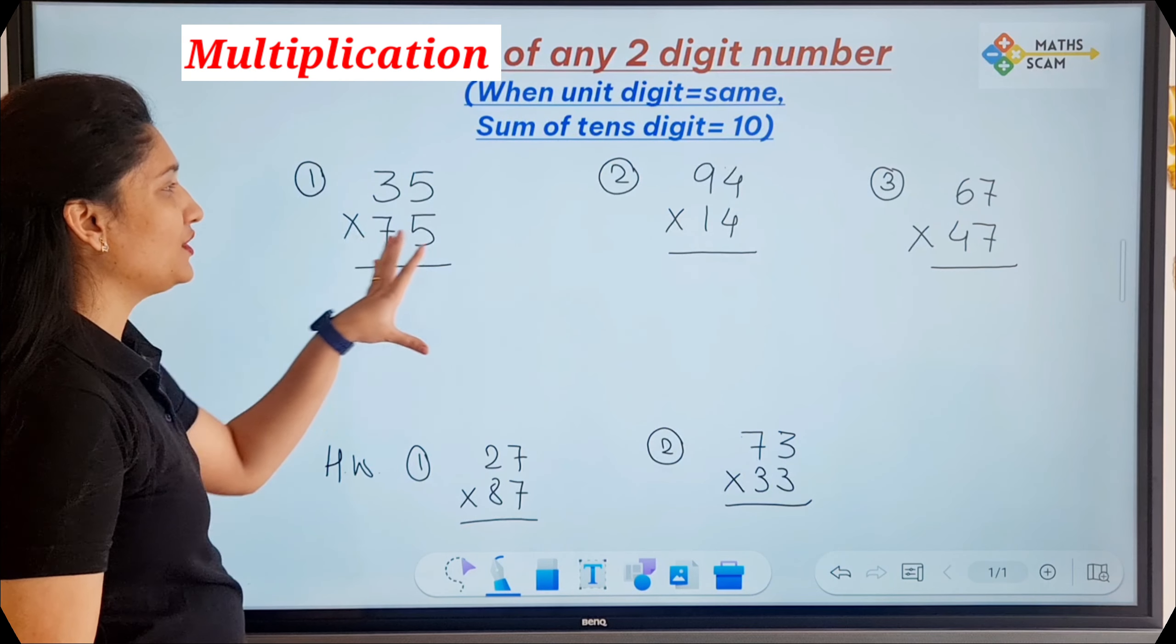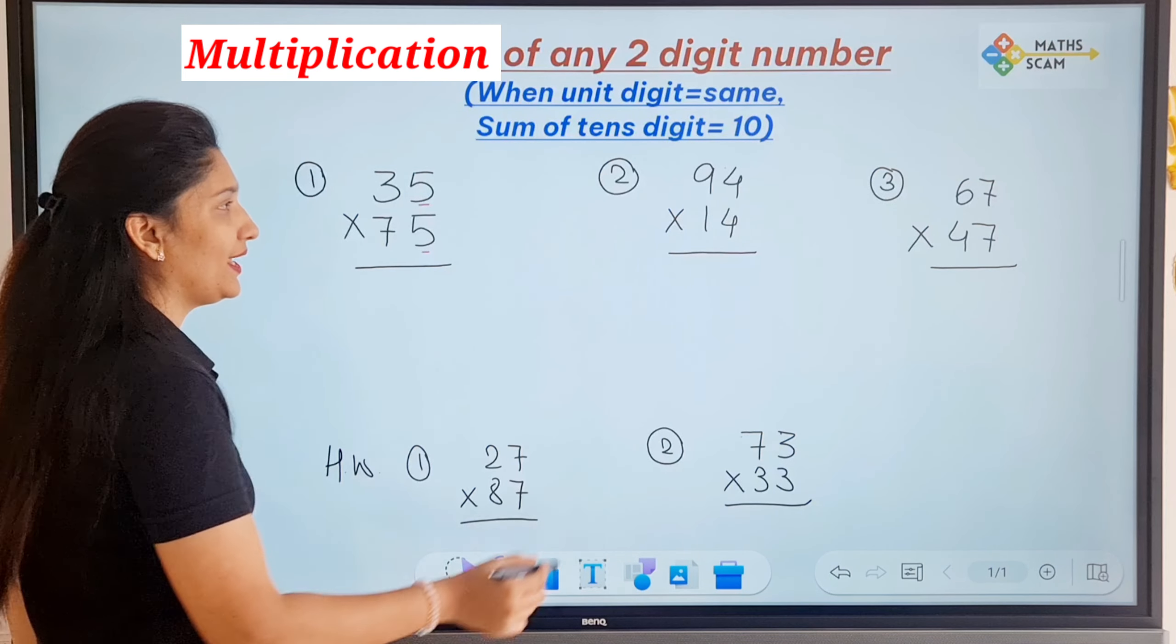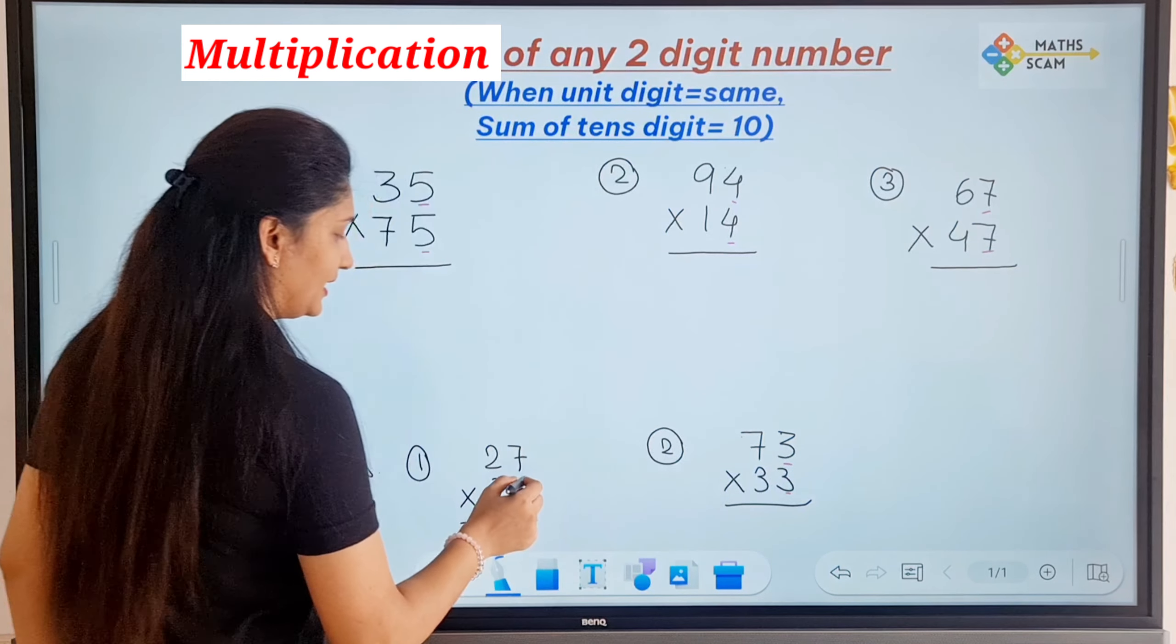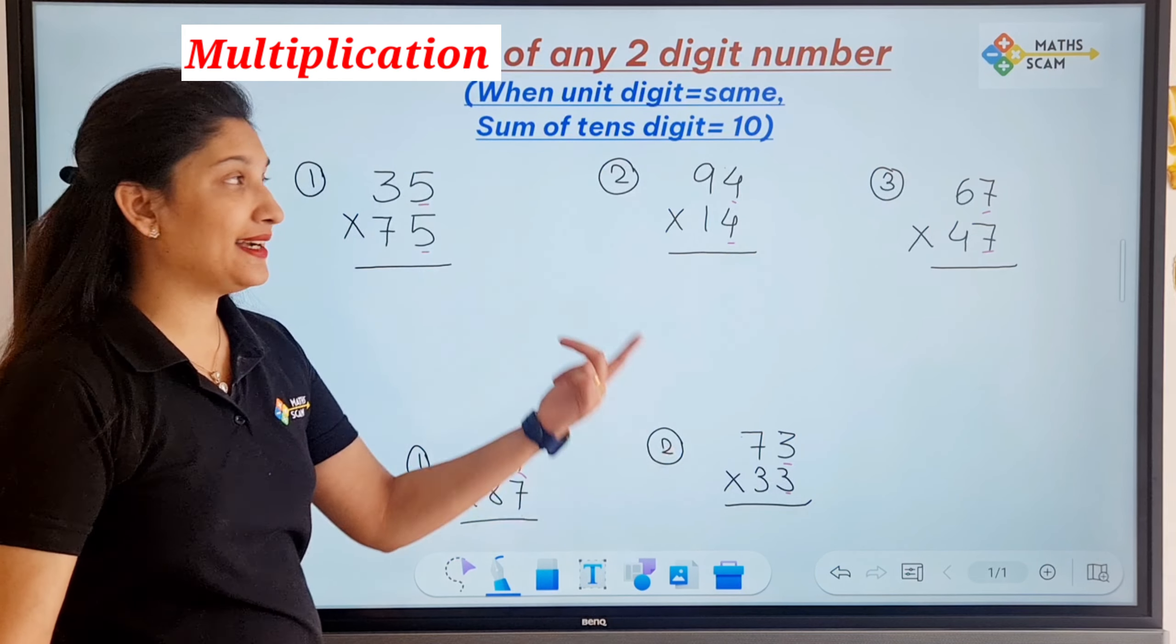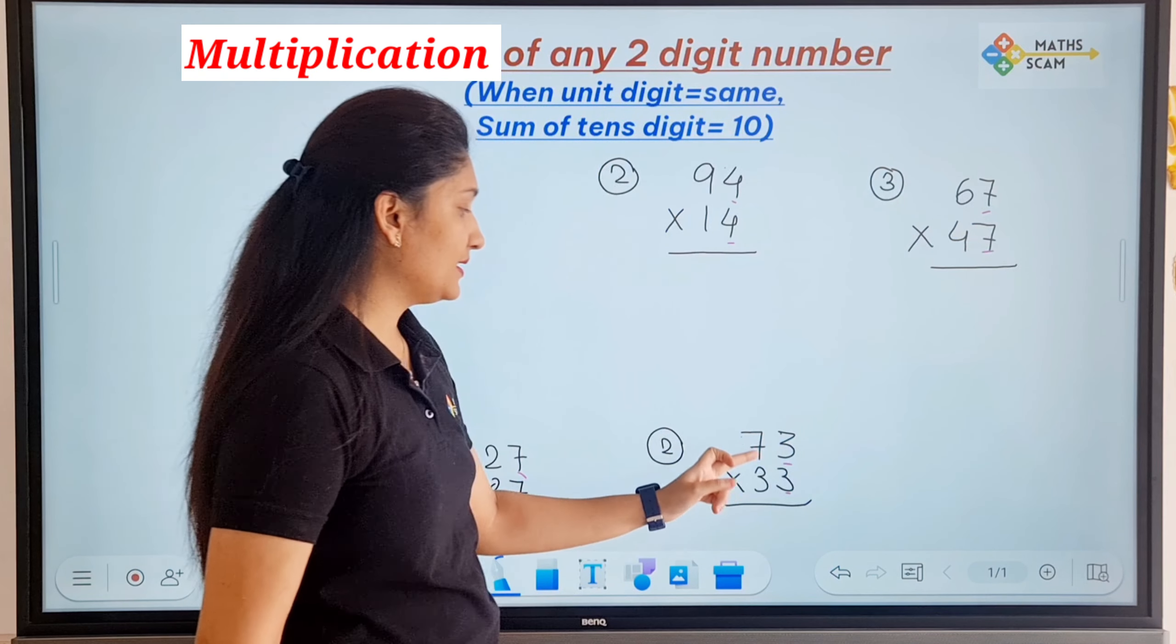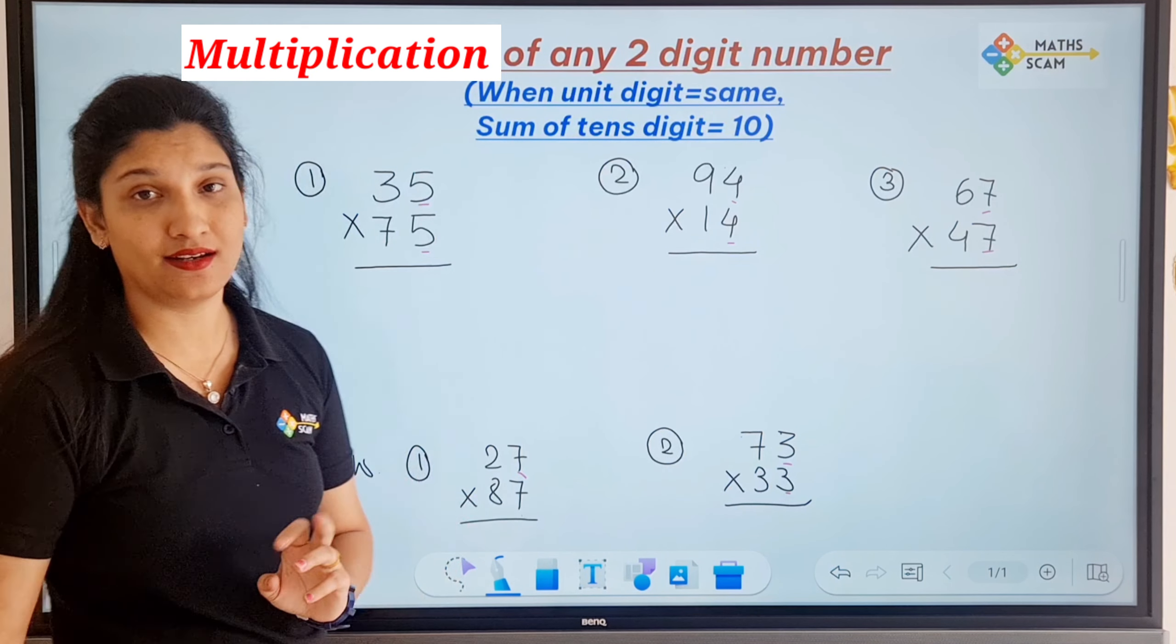So see, if you see all the questions here, the unit digit is equal to 4, 4, 7, 7. In question 3, it's 3, 7, 7. And the tens digit is 10: 7 plus 3 is 10, 9 plus 1 is 10, 6 plus 4 is 10, 7 plus 3 is 10, 2 plus 8 is 10, right?